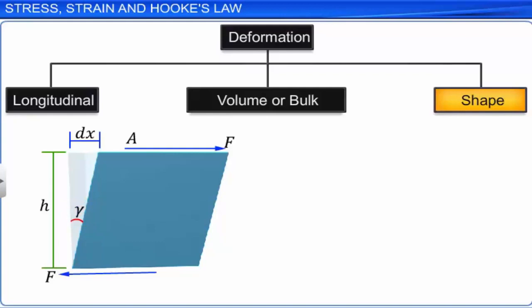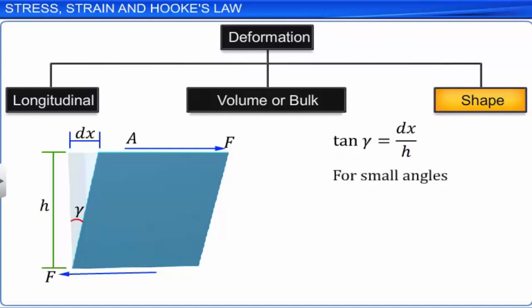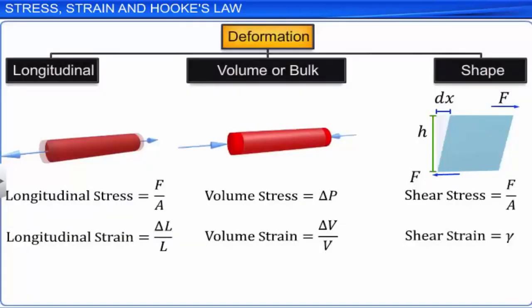Robert Hooke found that for most materials, for small values of strain, the stress is directly proportional to the strain. Thus, we have stress equal to k times strain, where k is the constant of proportionality called the elastic modulus of the material. If, on increasing the stress, the strain is increased beyond a certain value, the proportionality between stress and strain is lost. There are some materials that do not obey Hooke's law. For example, for materials such as polymers like rubber, human muscles, and blood vessels, stress is not proportional to the strain.